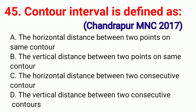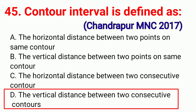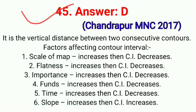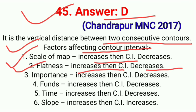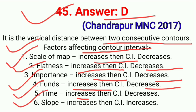Question No. 45. Contour interval is defined as — correct option D: The vertical distance between two consecutive contours. Factors affecting contour interval: scale of map increases then contour interval decreases; flatness increases then contour interval decreases; importance increases then contour interval decreases; fund increases then contour interval decreases; time increases then contour interval decreases; slope increases then contour interval increases. Correct option D.